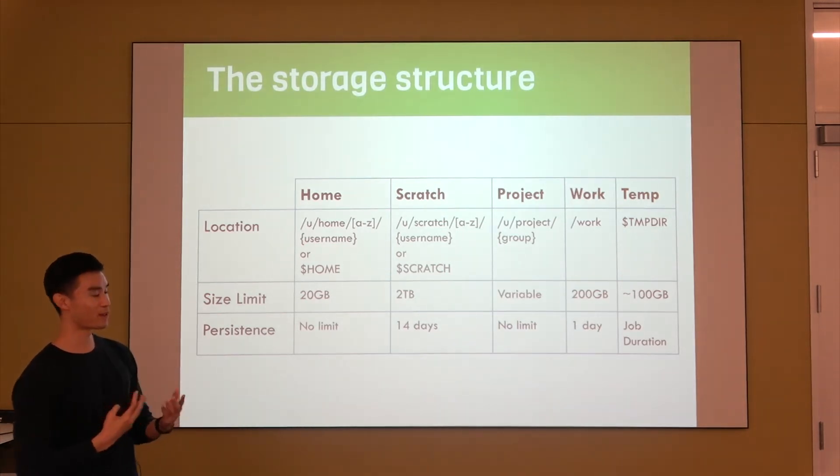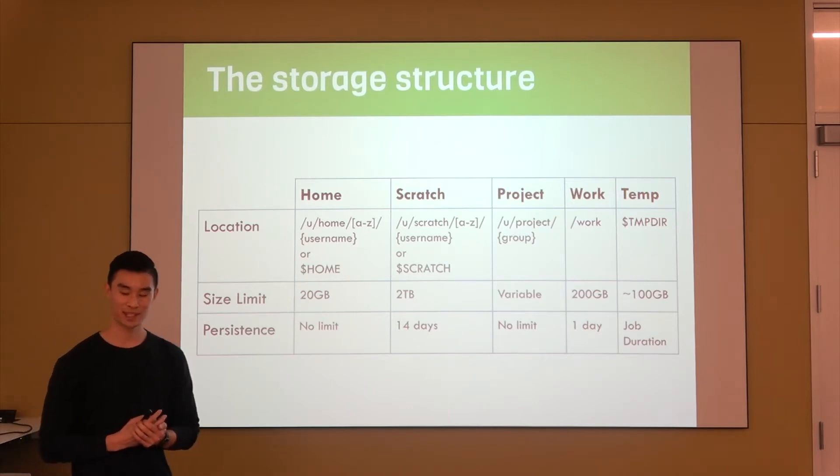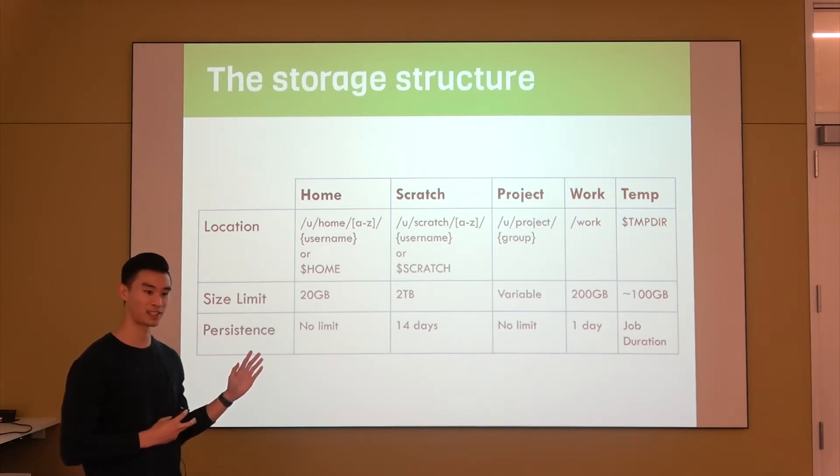And then moving more to the right, you have some more temporary forms of storage. You have the work directory, which a lot of people don't actually use on Hoffman. Each user is allowed to use 200 gigabytes here, but like the scratch—and even worse than the scratch—the files are subject to deletion after one day, and I'm pretty sure they're much more strict on this limit.